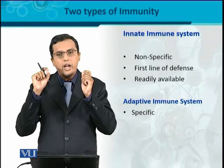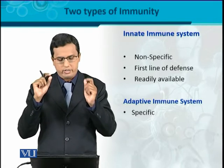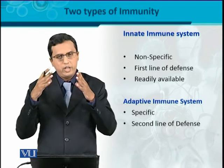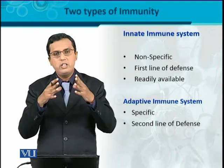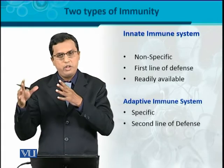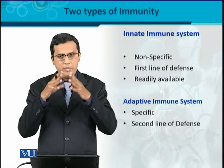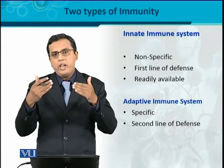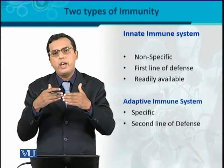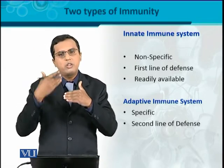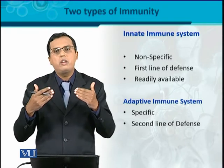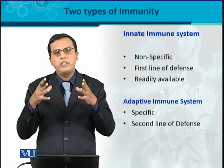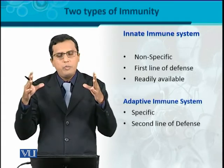Specificity of the adaptive immune system is one of its important characteristics. In contrast to the innate immune system, the adaptive immune system is the second line of defense. When you enter a building and there is another security check inside, that represents the second line of defense. If the first line of defense is bypassed or breached by the infectious agent, then the second line of defense is there to protect the body — but in a specific manner, not non-specific.